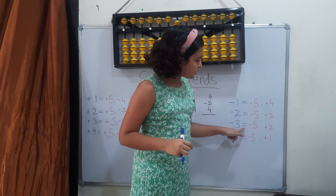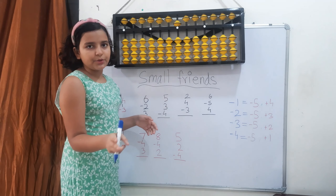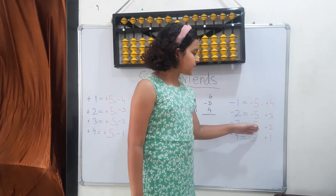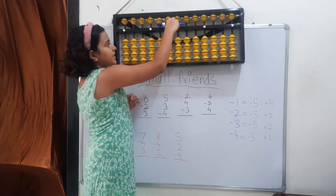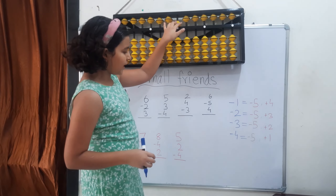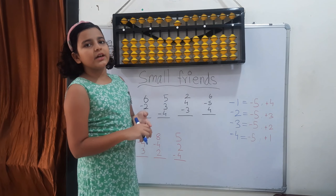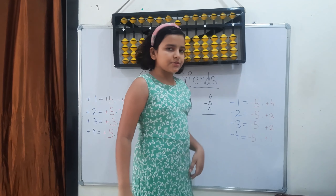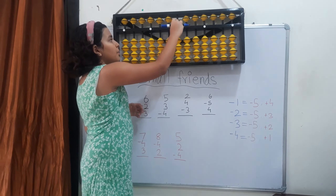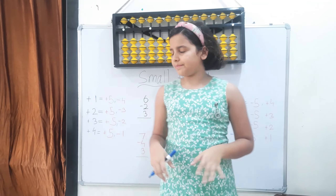For minus 3: minus the 5 plus the 2. So minus the 5 and plus the 2, and the answer is 2. Now the last subtraction formula: minus 4. I have 5 here but can't directly minus 4, so I use the formula — minus 4 equals minus the 5 plus the 1. Minus the 5 and plus the 1, so the answer is 1. These formulas help in any case.